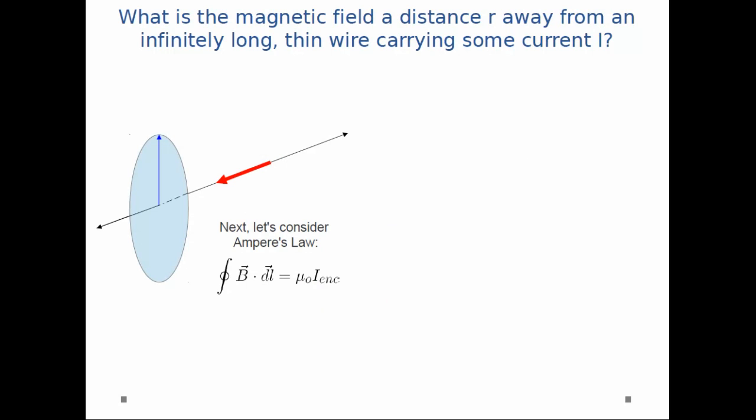Now we can consider Ampere's law for this problem. So, closed integral B dot DL is equal to μ₀ i enclosed. I can expand the dot product on the left. B dot DL is just magnitude of B times the magnitude of DL times the cosine of the angle between them.